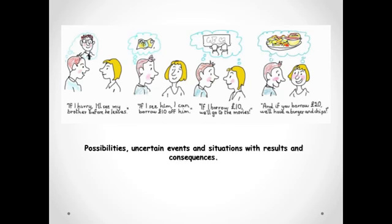We call this first conditionals. If I see him, I can borrow 10 pounds off him. If I borrow 10 pounds, we'll go to the movies. And if you borrow 20 pounds, we'll have a burger and chips. We use the first conditional to talk about a possible event or situation in the present or the future and its result of consequence. We can use it in many different situations.